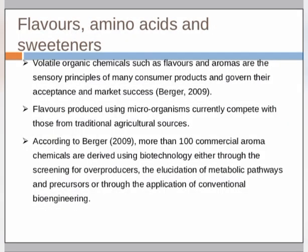Flavors, amino acids, and sweeteners. Volatile organic chemicals such as flavors and aromas are the sensory principles of many consumer products and their acceptance and market success. Flavors produced using microorganisms currently compete with those from traditional agricultural sources. According to Berger (2009), more than 100 commercial aroma chemicals are derived using biotechnology, either through the screening for novel producers and elucidation of metabolic pathways and precursors, or through the applications of conventional bioengineering.